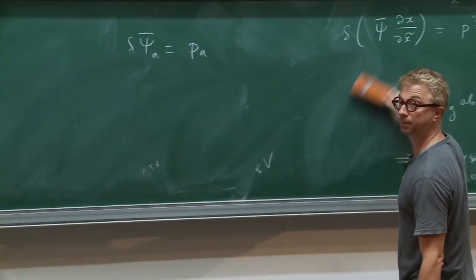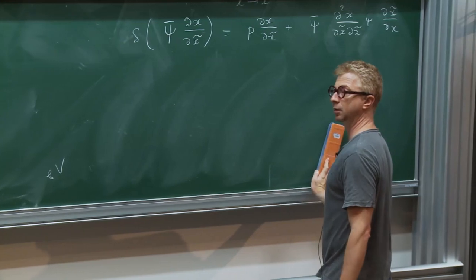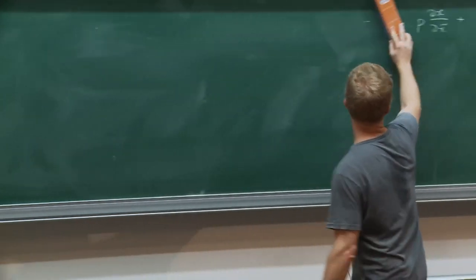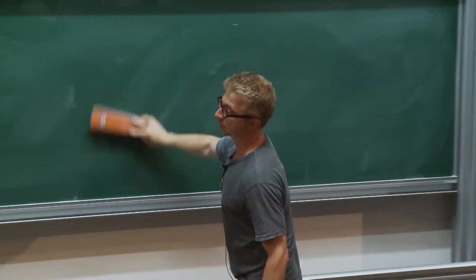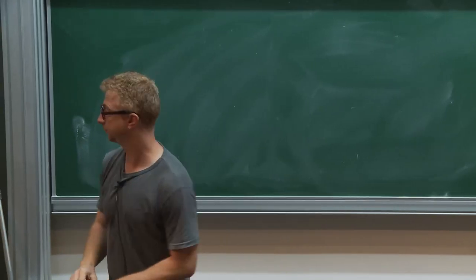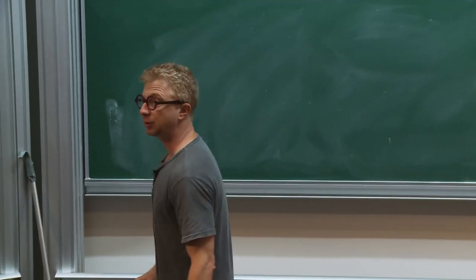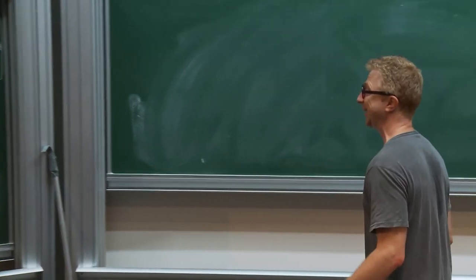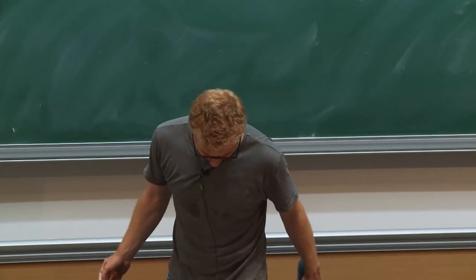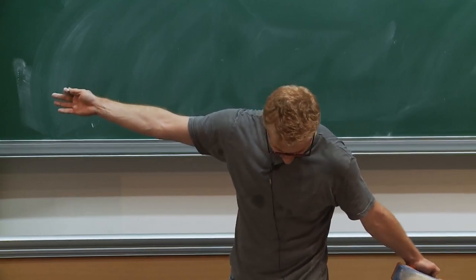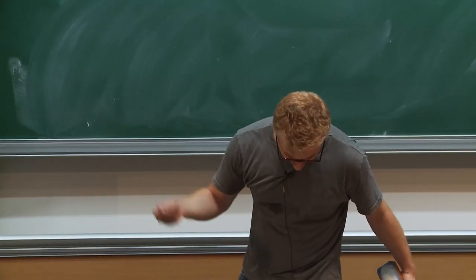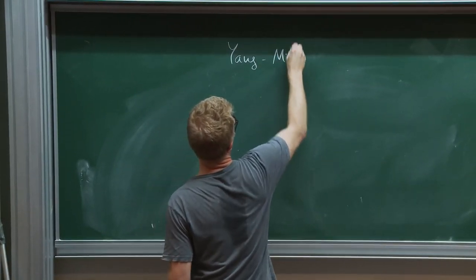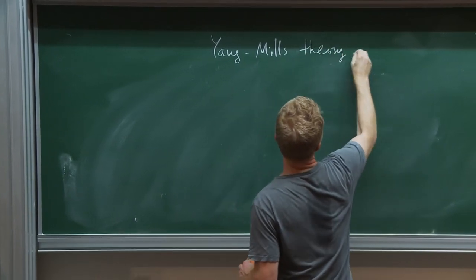Q: Is there any condition that the sigma model becomes conformal? A: Yes, of course there are conditions, but this is classical analysis — classically it is always conformal. Q: Nikita, why did you assume J is not integrable? A: I did not assume it was integrable. I just did not assume anything about J — just an almost complex structure. This is just an algebraic manipulation. If it is integrable, you get more structure.